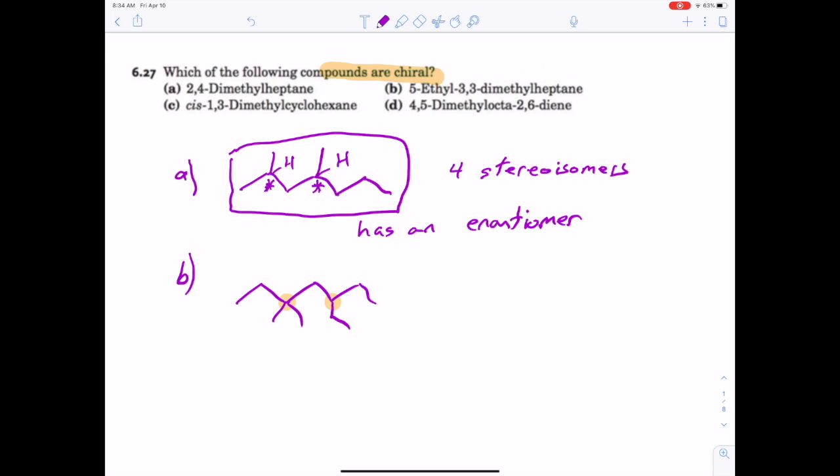So to have an enantiomer, there has to be at least one chiral center. If there's one chiral center, there is definitely an enantiomer. This has no chiral centers, not chiral.